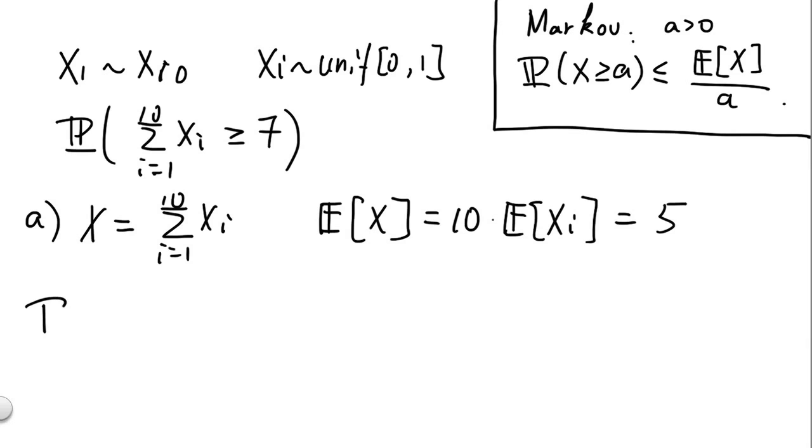So now we can invoke Markov's inequality. It says P(x ≥ 7) is less than E[x] over 7, and this gives us 5 over 7.